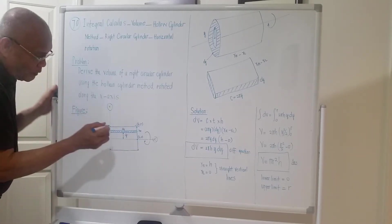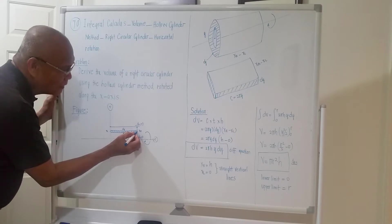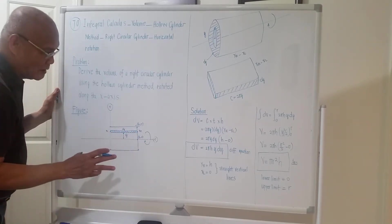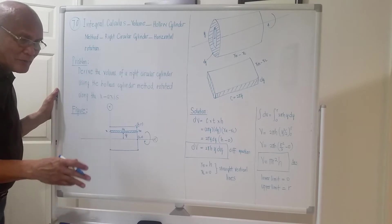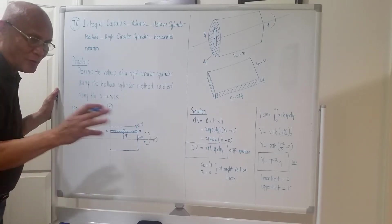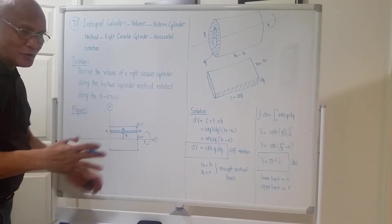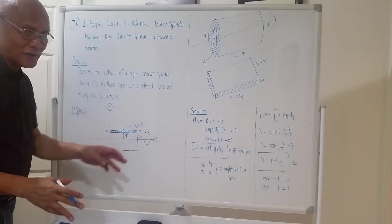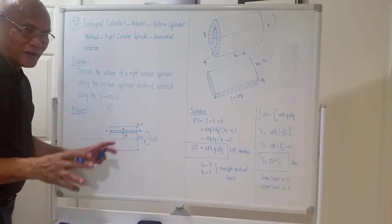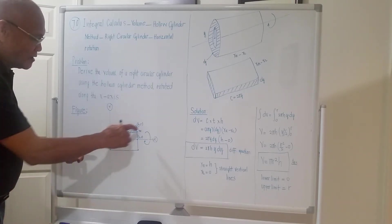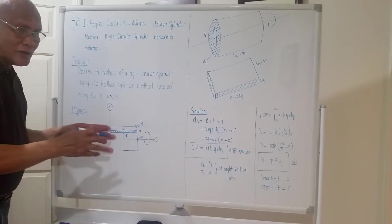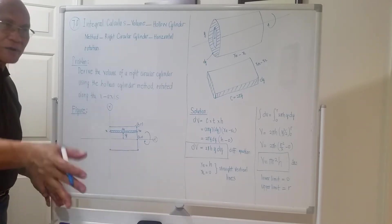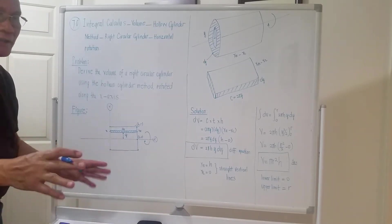As dy moves, xr and xl could either be constant or variable, depending on the situation. But for the horizontal cylinder, luckily xr and xl are actually constant. So we are just lucky for this problem, but other problems we will not be so lucky.